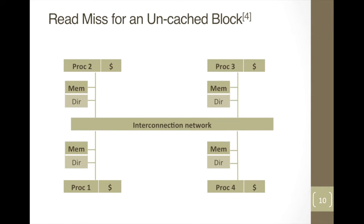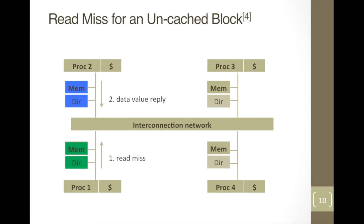Let's consider an example of a read miss for an uncached block. A read operation originates in P1, so P1 is the local node, highlighted in green. P1 does not have the cached copy of the memory. The request is sent to the home node, P2, with a message of read miss. If P2 has the data, a data value reply message is sent to P1.